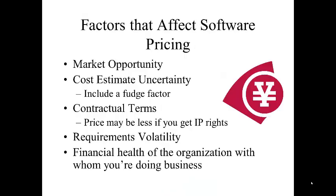Factors that affect software pricing: one is market opportunity; cost factor uncertainty — include a fudge factor so you can move it a little higher than what you think it will cost so you actually cover the cost. Contractual terms — for example, the price may be less if you get the intellectual property rights. Requirements volatility and the financial health of the organization you're doing business with. If the company isn't financially healthy, you'll probably want to request more money up front. Also consider whether this product will allow you to develop a unique position in the marketplace against a competitor — if so, you may want to lower the price a little bit.